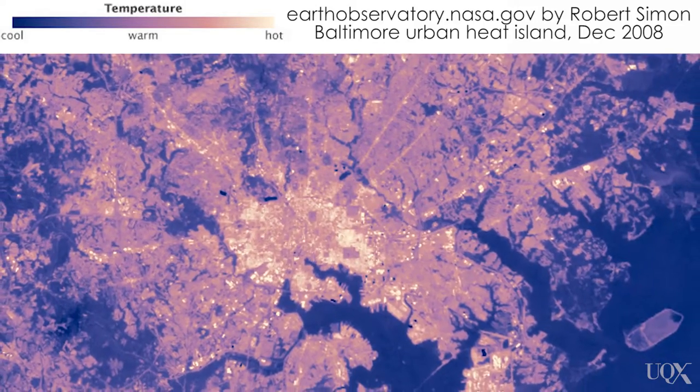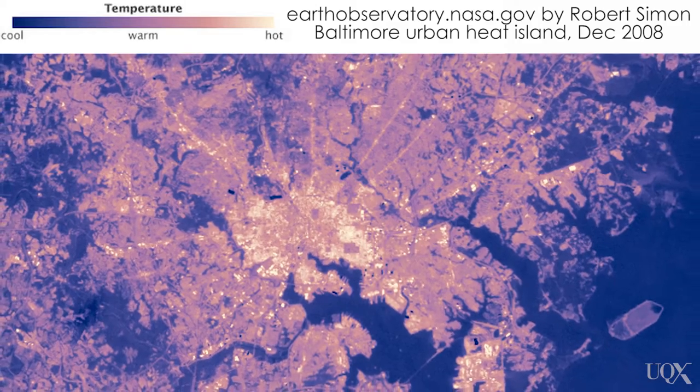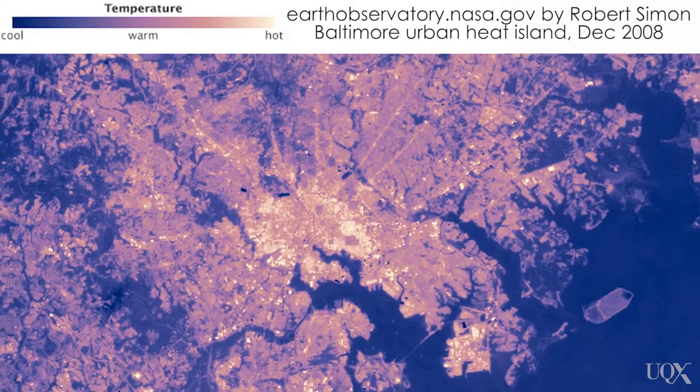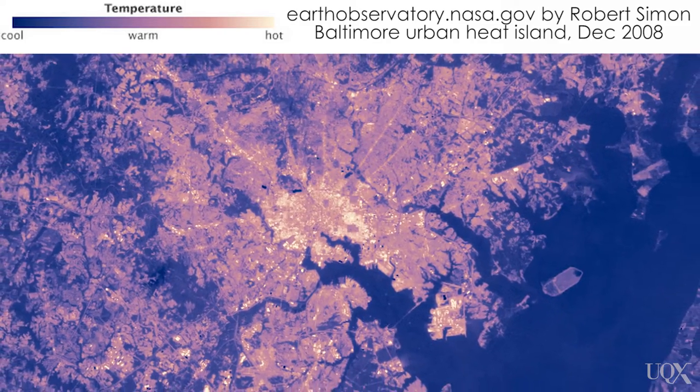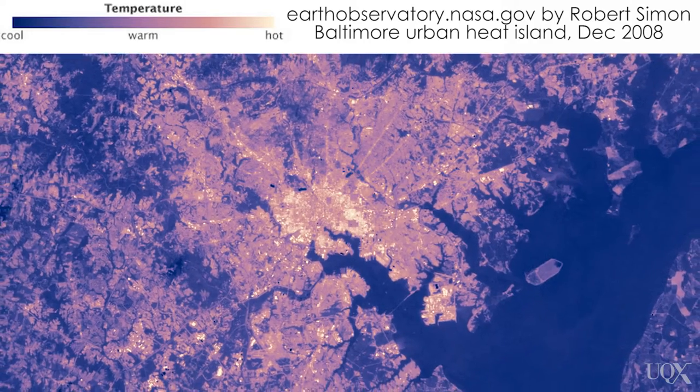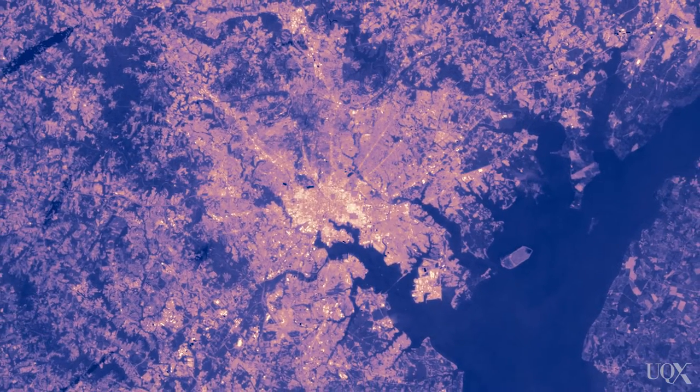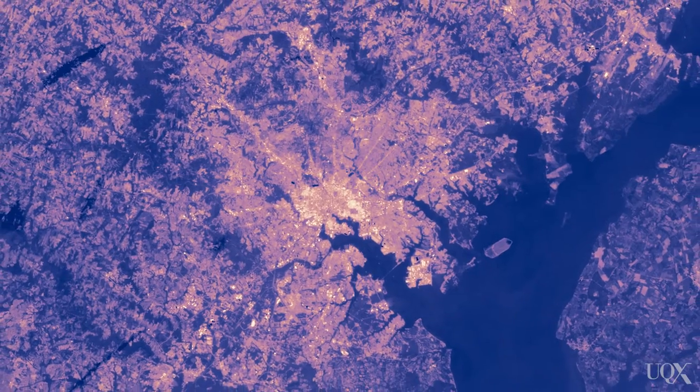We tend to find that urban areas are warmer than rural surrounds, and it's called the urban heat island because it tends to show up like an island of heat. If you think of a city with relatively simple geography — urban areas surrounded by grasslands and pastures — you get this island of heat in the middle. It's caused because we replace natural rural landscapes with lots of concrete and buildings that absorb more energy from the sun and hold that energy for longer.